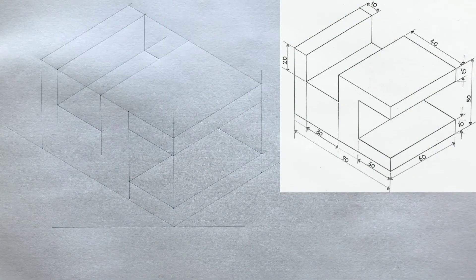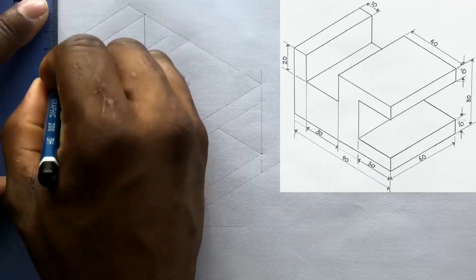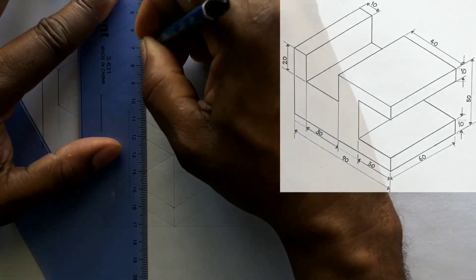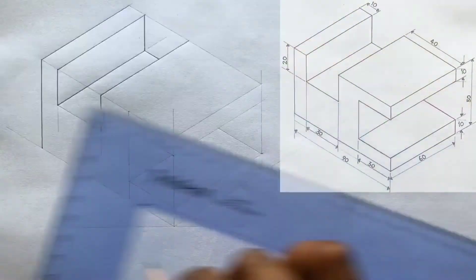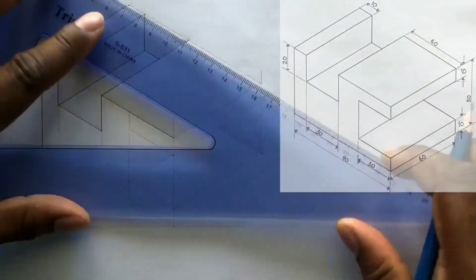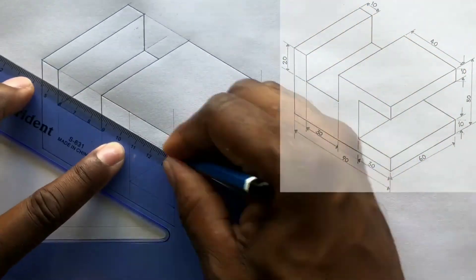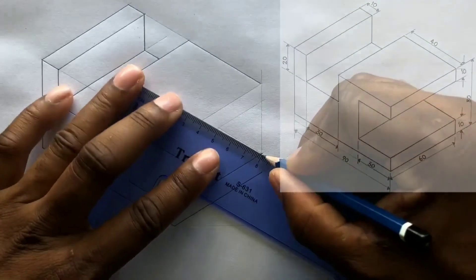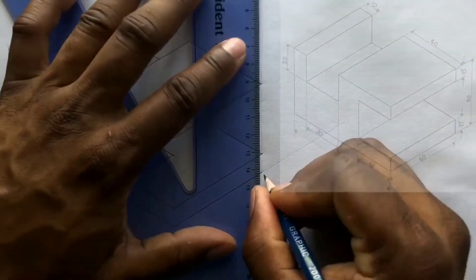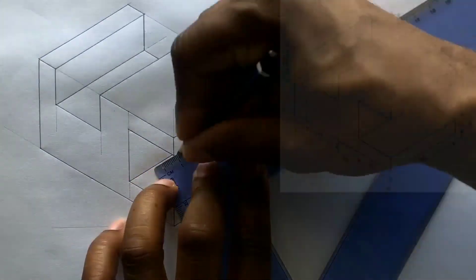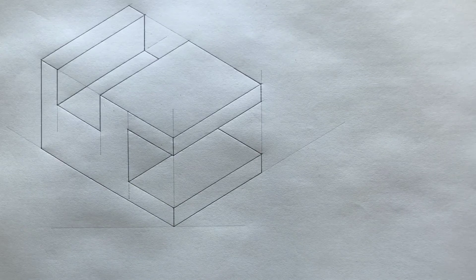Now go ahead and outline your required isometric projection. Excellent — it was not difficult at all. Now border your paper and complete your title block.